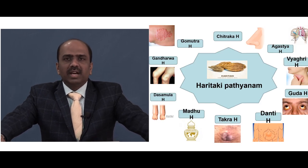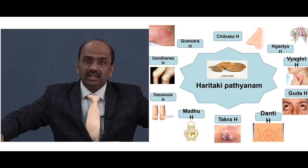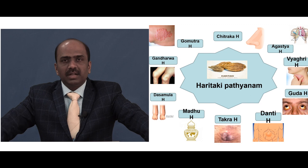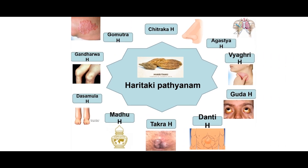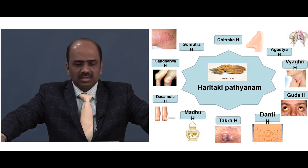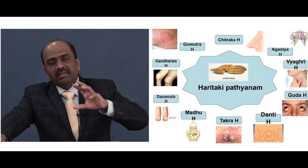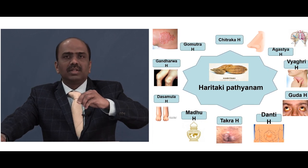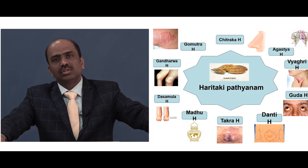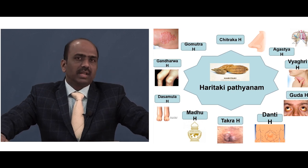Haritaki is called 'Pathya' — conducive to the paths, that is the srotas of the body. Different formulations include: Chitra Haritaki for nasa roga, Agasthi Haritaki for phupsa roga, Agri Haritaki for khanta roga, Gudha Haritaki for kamala, Dhanti Haritaki for abdominal disorders, Takar Haritaki for gudarshas, Madu Haritaki as rasayana, Dashimula Haritaki, and Gandharvasaya Gomutra Haritaki. Wherever there is a chance of blockage, Haritaki formulations are indicated, as Haritaki removes blockages of the srotas.